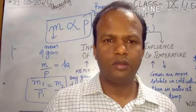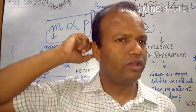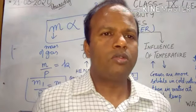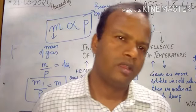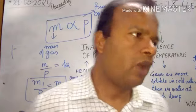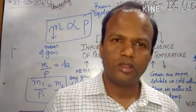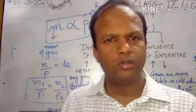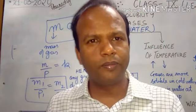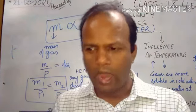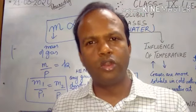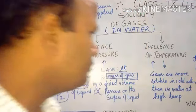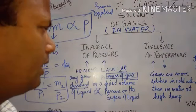Why do fish die in deep seawater during summer season? Because the oxygen escapes out due to increased temperature — fish die due to lack of oxygen. Take the example of cold drink: at room temperature when you open it there is no fizzing, but when you open a chilled cold drink — where temperature is lowered — it fizzes out, because solubility has increased at lower temperatures. So gases are more soluble in cold water than in water at high temperature.